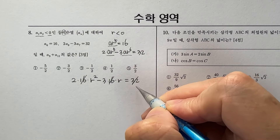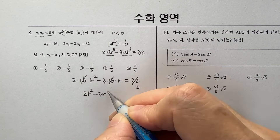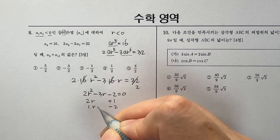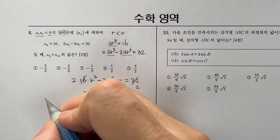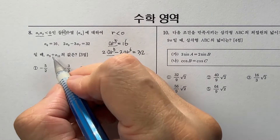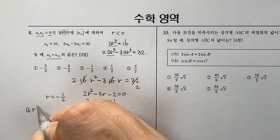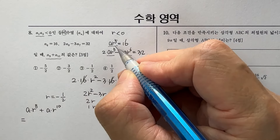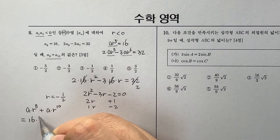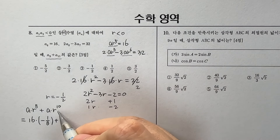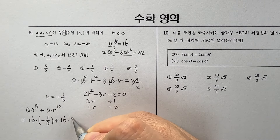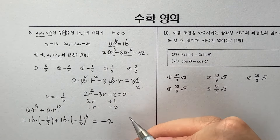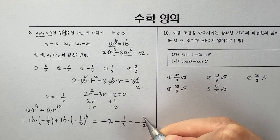16으로 약분하고 이항해서 2r² - 3r = -2, 인수분해하면 (2r+1)(r-2) = 0이죠. r은 -1/2 또는 2인데, 아까 공비가 음수였기 때문에 r은 -1/2이 되고, 아홉 번째 항은 ar⁸ = 16·r³ = 16·(-1/8) = -2, 열한 번째 항은 ar¹⁰ = 16·r⁵ = 16·(-1/2)⁵ = -1/2. 더하면 -5/2, 1번이 됩니다.